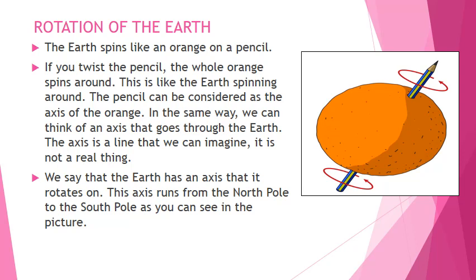The Earth spins like an orange on a pencil. If you twist the pencil, the whole orange spins around — this is like the Earth spinning around. The pencil can be considered as the axis of the orange. In the same way, we can think of an axis that goes through the Earth. The axis is a line that we can imagine; it is not a real thing. We say that the Earth has an axis that it rotates on. This axis runs from the North Pole to the South Pole, as you can see in the picture.